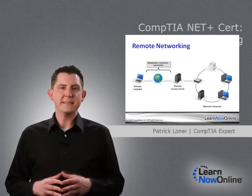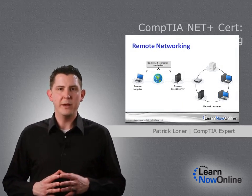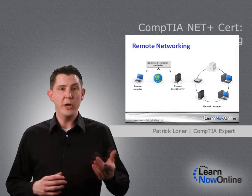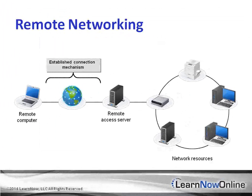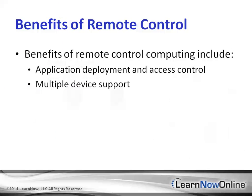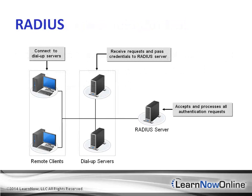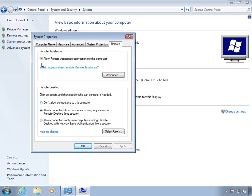You're going to learn that there are two basic types of remote networking: remote node and remote control. Remote node is implemented through the use of dial-up and/or VPN connections, and it extends the network to the remote device, allowing that device to access resources after it's authenticated itself and after it's been authorized to do so.